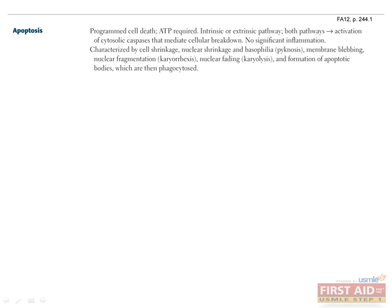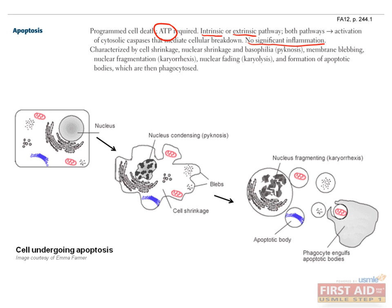Let's start with apoptosis. Apoptosis is programmed cell death, which in a crude sense is clean cellular suicide. To keep everything clean, it requires ATP. There are two ways that a cell can do this — the intrinsic or the extrinsic pathway. We'll get to those soon, but regardless of the pathway, the most important thing about apoptosis is that there is no significant inflammation.